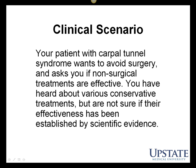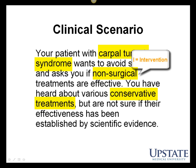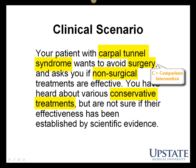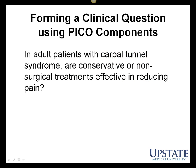Looking at our clinical scenario, let's identify the PICO components. Carpal tunnel syndrome is our problem. Non-surgical, or conservative, is our intervention. Surgery is our comparison intervention. Reduced pain is our outcome. Using our PICO components, we can now form our clinical question: In adult patients with carpal tunnel syndrome, are conservative or non-surgical treatments effective in reducing pain?